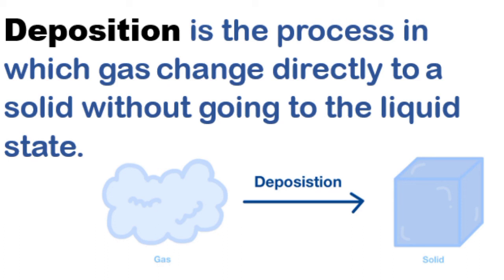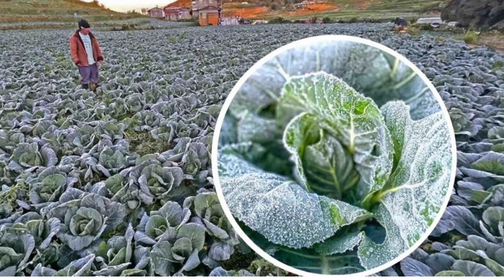Deposition is the process in which a gas changes directly to a solid without going through the liquid state. Farmers in Pau'i, Atok woke up to find light frost on their cabbage patches and other crops as the temperature dropped to 9 degrees Celsius. This cold spell is due to the Northeast Monsoon, or Amihan, cold air from Siberia that starts in October and reaches its peak at this time of year.